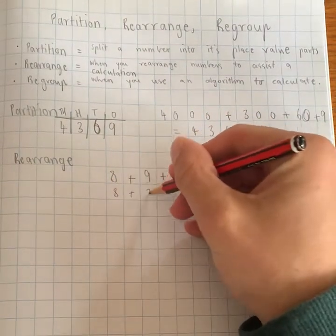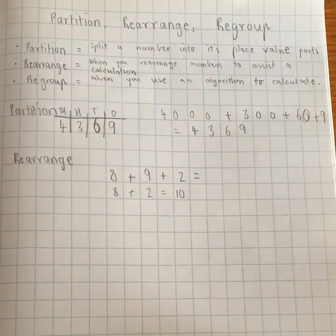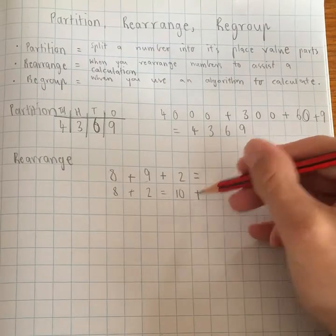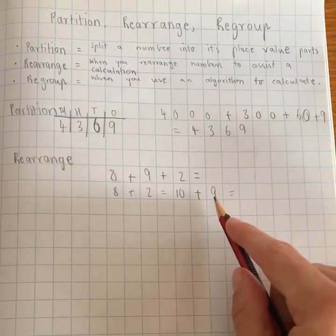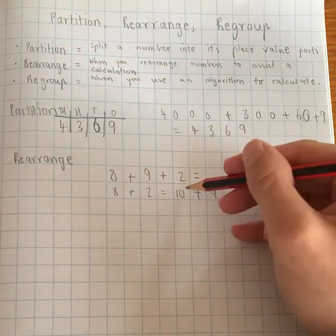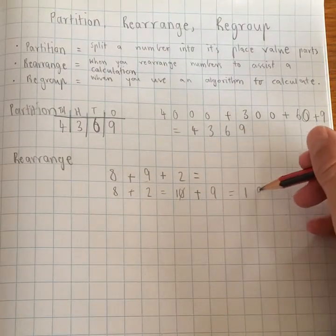So 8 plus 2 makes our 10. Okay, and then what I can do is add the 9 on the end, because when we add to a 10, a single digit to a 10, we just get rid of that 0 in our answer and make it 19.